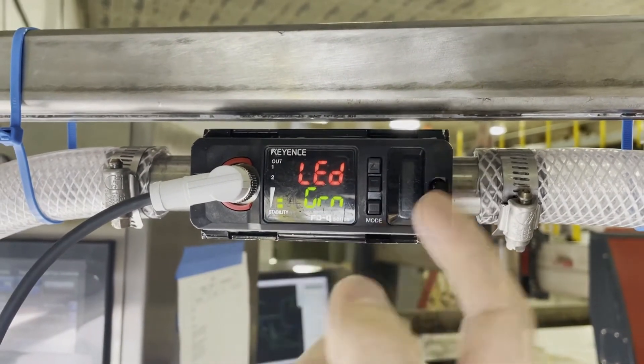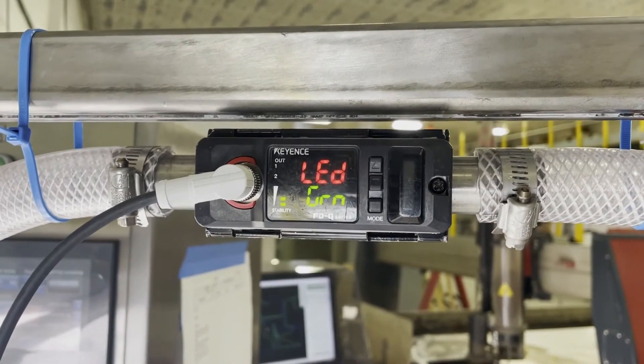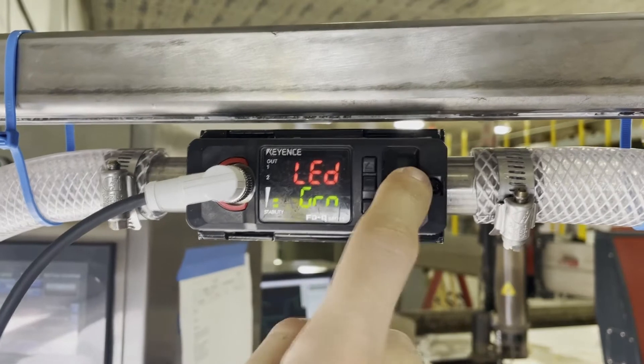So now the LED. This means when I go above a certain flow rate, I turn green. If I go below, I turn this color. So meaning when I see flow, this is going to go green.